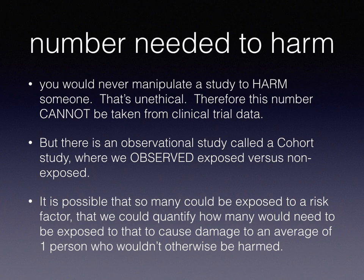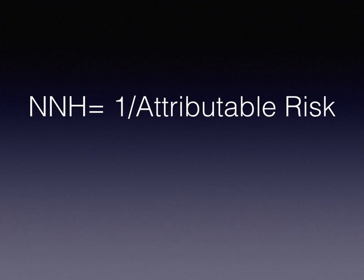So it's possible that so many could be exposed to a risk factor that we could quantify how many would need to be exposed to cause damage to an average of one person who wouldn't otherwise be harmed. We get this by dividing 1 over the attributable risk — remember, we use the attributable risk to attribute the disease outcome onto exposure in cohort studies.